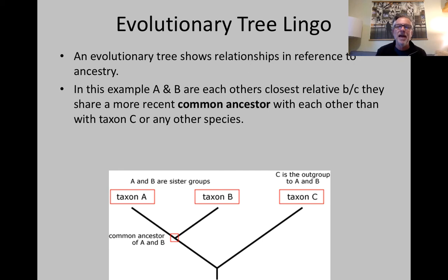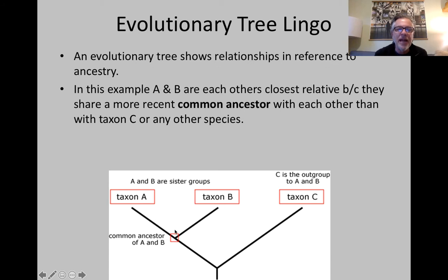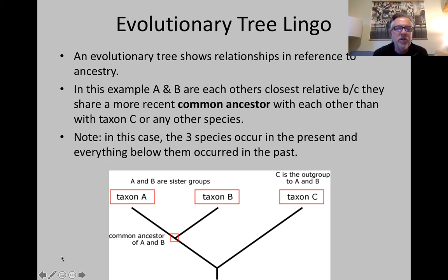It refers to any taxonomic category. In this example, taxon A and B are each other's closest relative. Why? Because they share the most recent common ancestor — seen here as the common ancestor of A and B. A and B share a more recent common ancestor than A does with C or B does with C. That's what evolutionary trees tell us: who is most related to whom. These three species occur in the present, and going vertically downwards is going backwards in time.